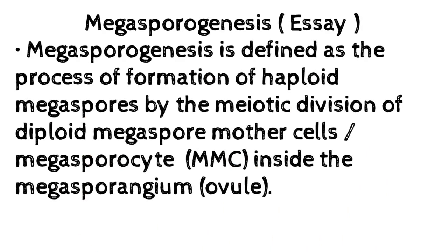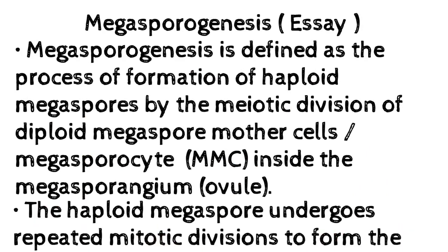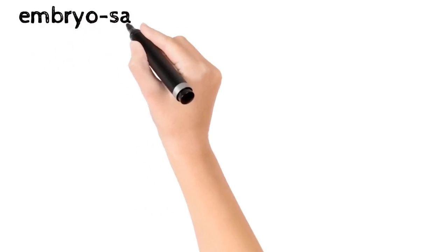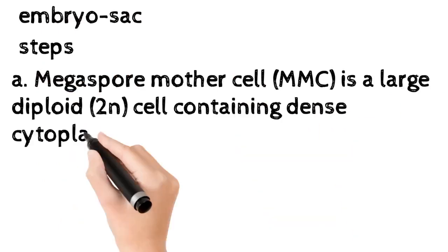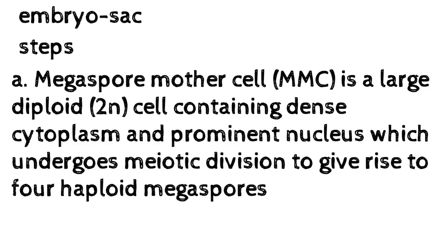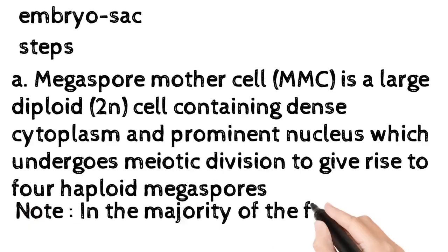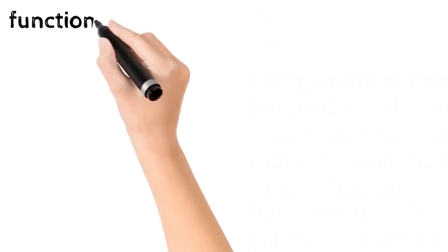The haploid megaspore undergoes repeated meiotic divisions to form the embryo sac. Step A: A megaspore mother cell (MMC) is a large diploid (2n) cell containing dense cytoplasm and a prominent nucleus, which undergoes meiotic division to give rise to four haploid megaspores. In the majority of flowering plants, only one of the megaspores is functional and the rest three degenerate.